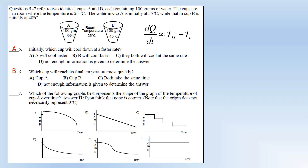Which of the four graphs best represents the shape of temperature over time? The answer is D, because as the temperature difference decreases, the rate at which heat energy is transferred - the gradient - should decrease as well. All of these questions essentially come from the principle that the rate of transfer of energy is proportional to the temperature difference.